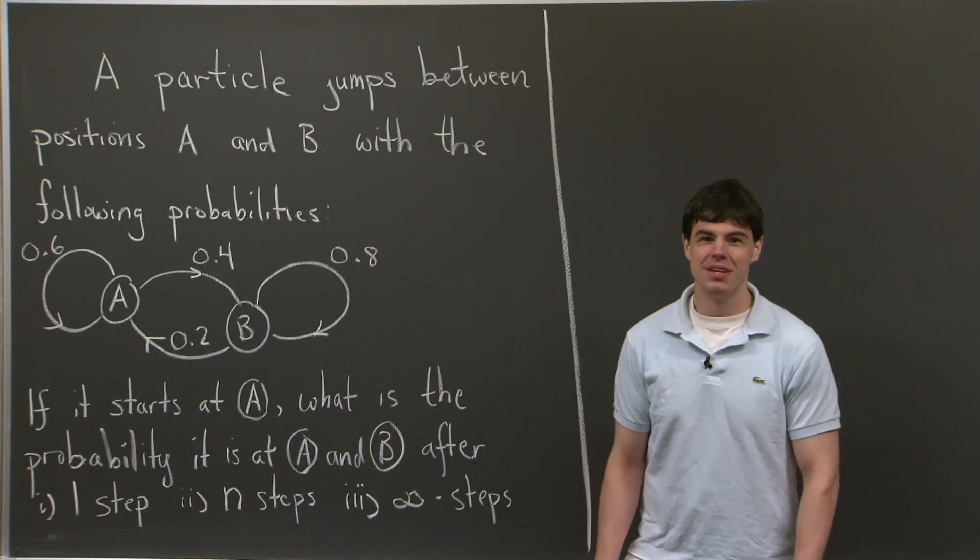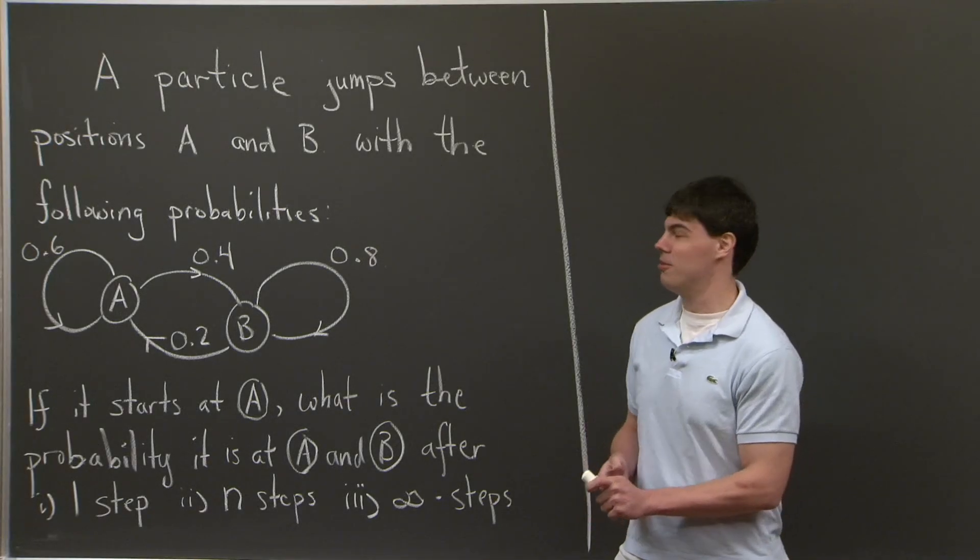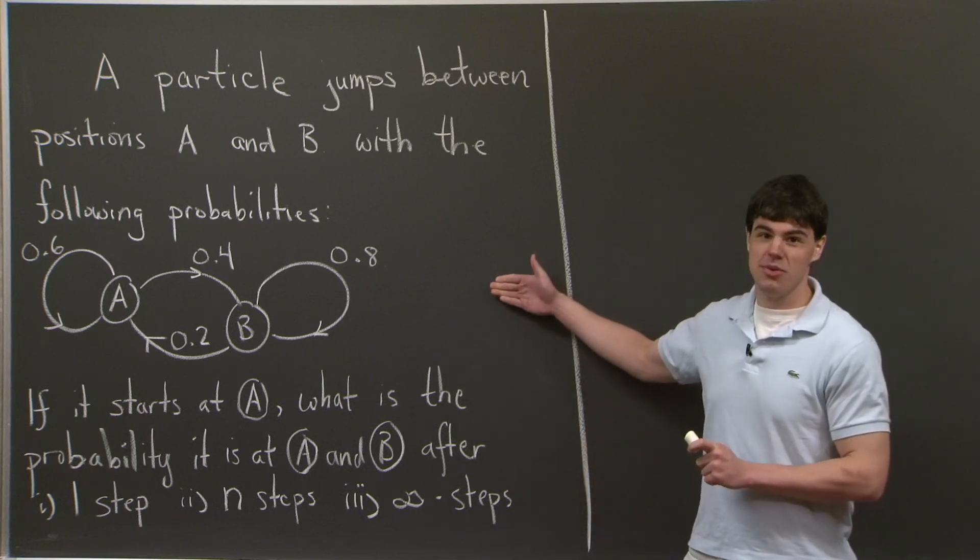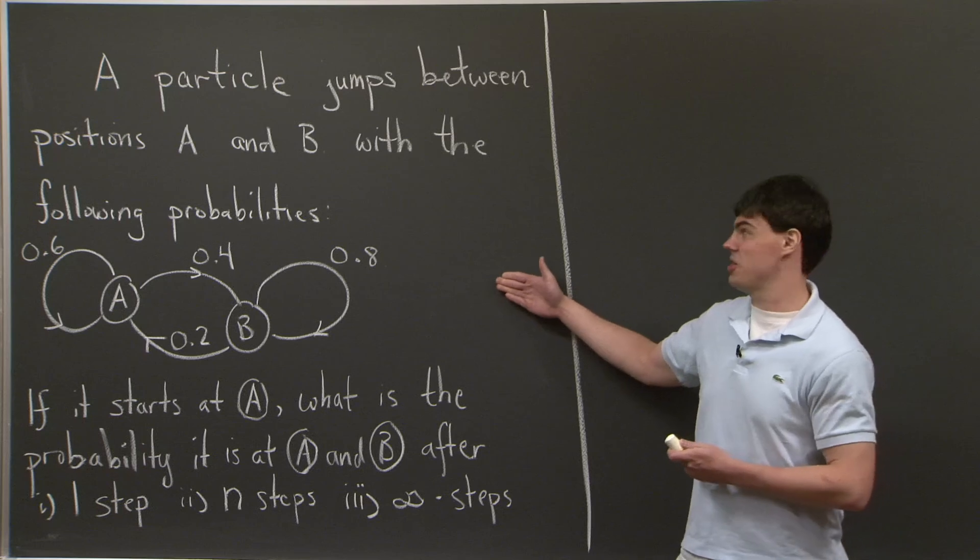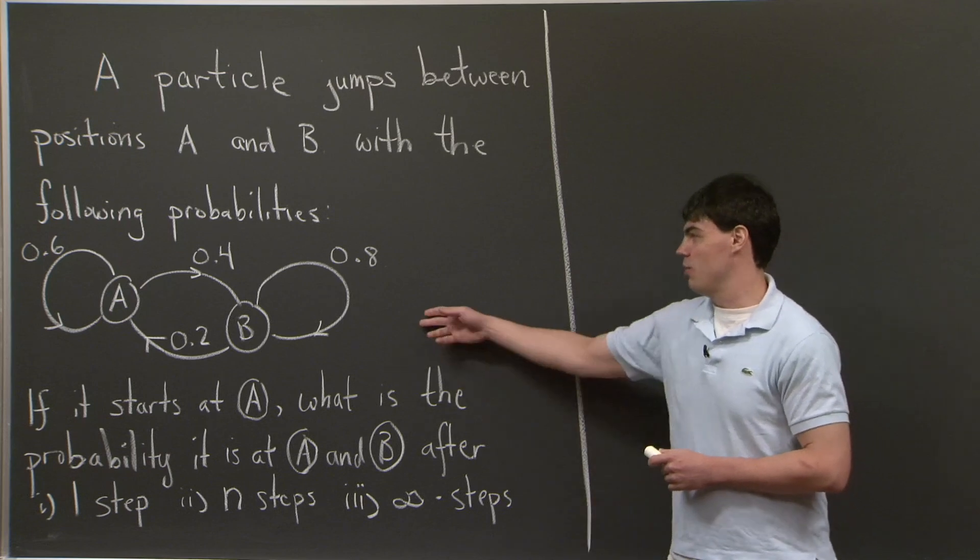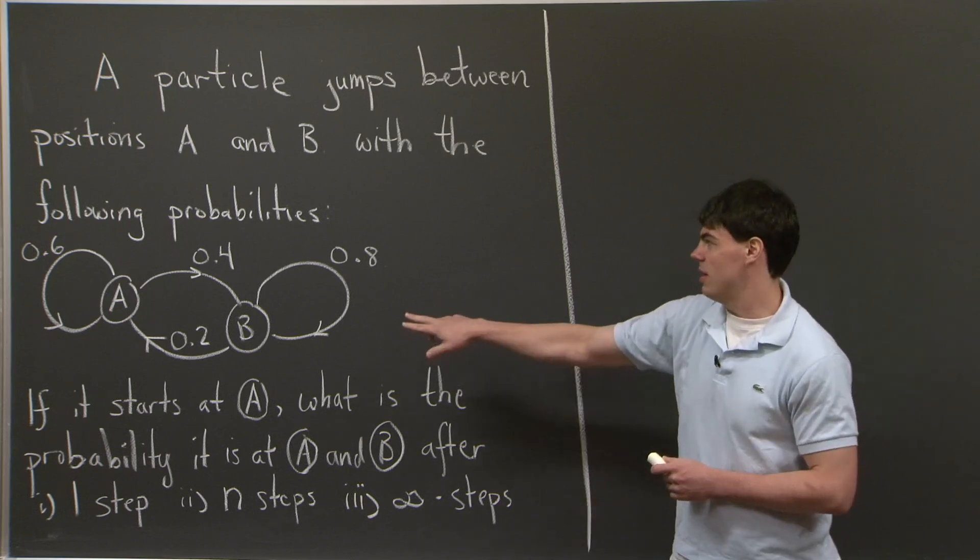Hi, everyone. Welcome back. So today, I'd like to tackle a problem in Markov matrices. Specifically, we're going to start with this problem, which almost has a physics origin. If we have a particle that jumps between positions A and B with the following probabilities, I'll just state it.